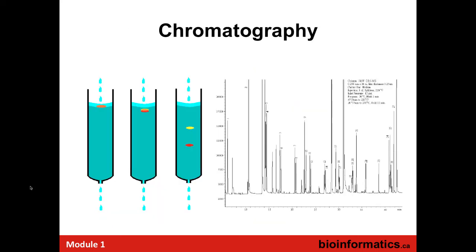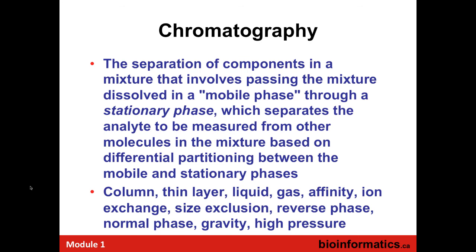Now we'll talk about chromatography — the silent partner in much of metabolomics and absolutely critical. This is what takes your mixture and simplifies it. You take a mixture, put it in a mobile phase, and pass it through a stationary phase — essentially the column matrix, which could be powder or plastic. The stationary phase separates the components or analytes from each other through differential partitioning. Chromatography has been around since the days of paper chromatography for more than a hundred years. You can run it through columns, thin layer chromatography plates, and have gas and liquid formats, affinity, ion exchange, size exclusion, reverse phase, and normal phase.